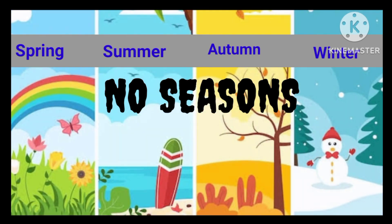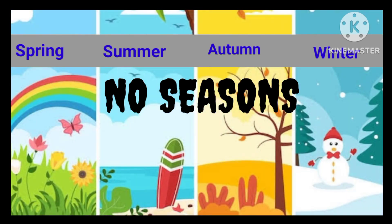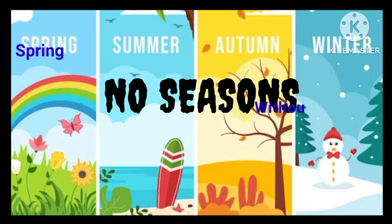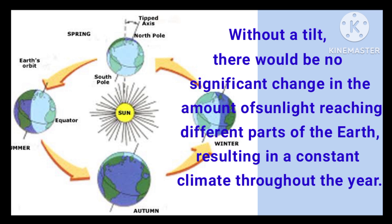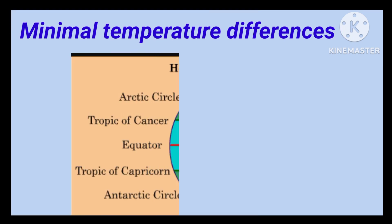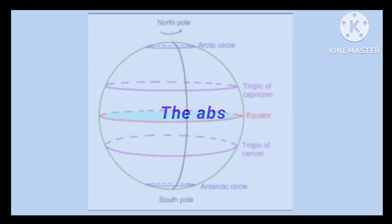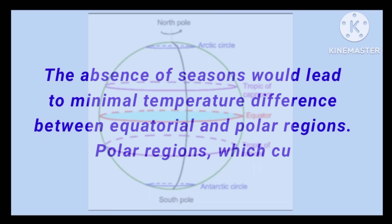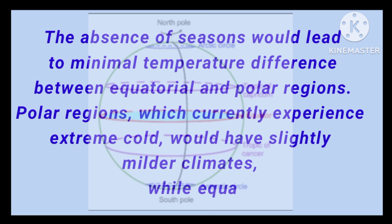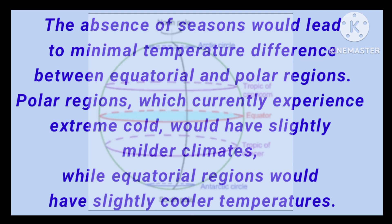The tilt of the Earth's axis is responsible for the various seasons we experience throughout the year. Without a tilt, there would be no significant change in the amount of sunlight reaching different parts of the Earth, resulting in a constant climate throughout the year. The absence of seasons would lead to minimal temperature differences between equatorial and polar regions. Polar regions, which currently experience extreme cold, would have slightly milder climates, while equatorial regions would have slightly cooler temperatures.